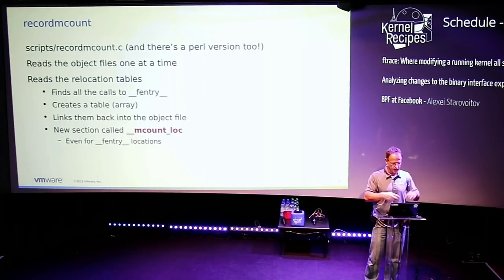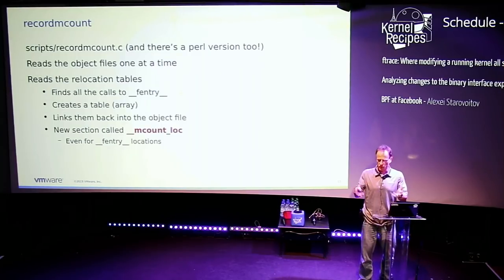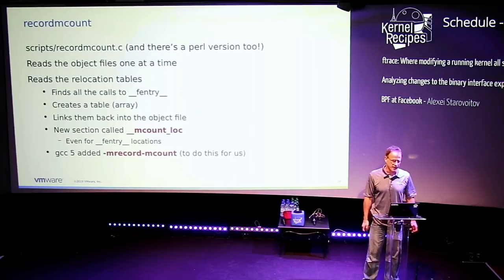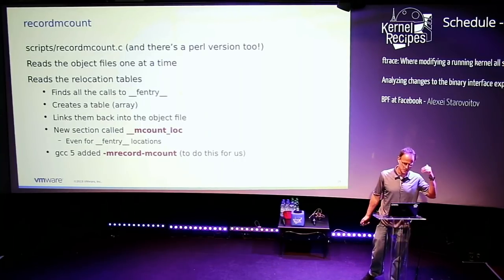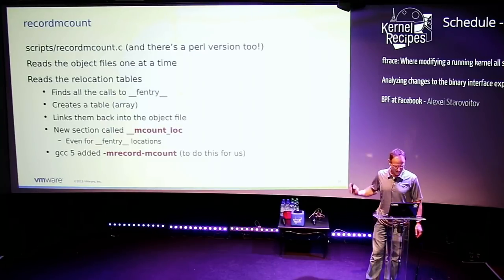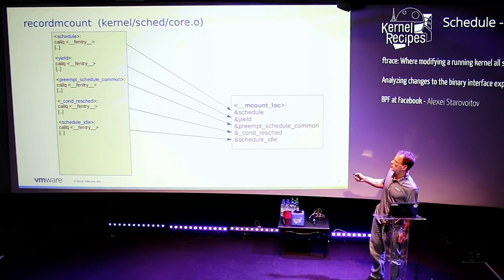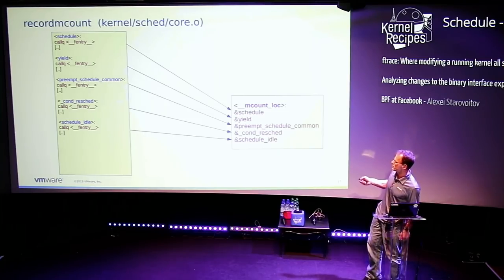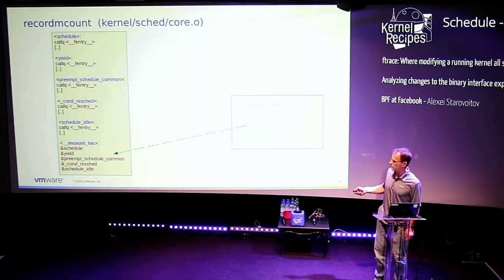Andy Kleen was still active in GCC and added -mrecord-mcount in GCC 5, which does this for us automatically. Basically, record_mcount goes through kernel/sched/core.c, finds all the call entries for schedule, yield, etc., creates a section called mcount_loc, and adds the addresses — references to where these fentry locations are. It then relinks that section right into the object file.